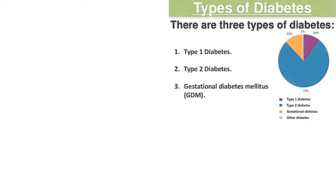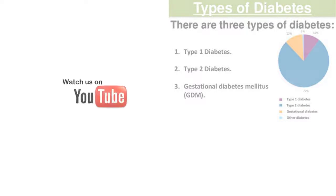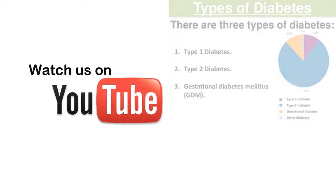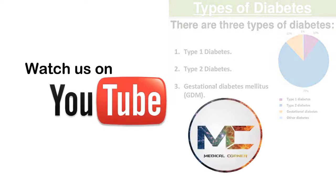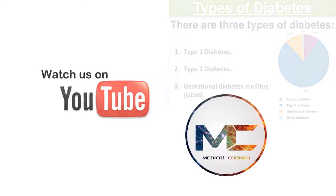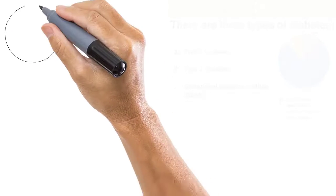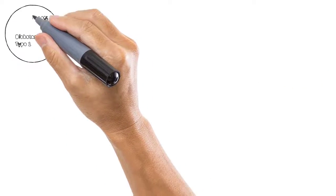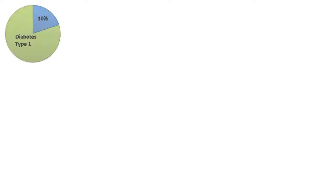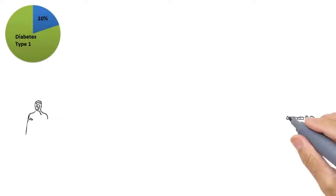There are three main types of diabetes: type 1, type 2, and gestational. In this video we'll talk about only type 1; the others will be covered in coming videos. Around 10% of all people with diabetes have type 1.